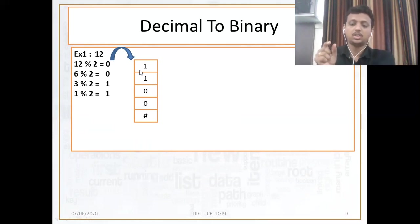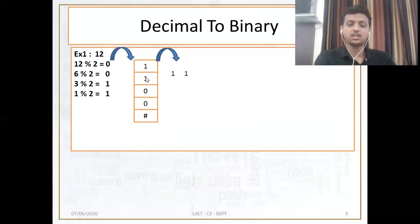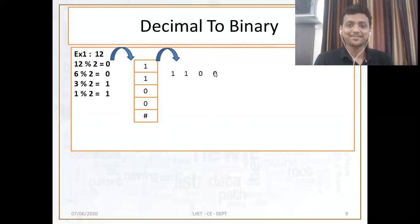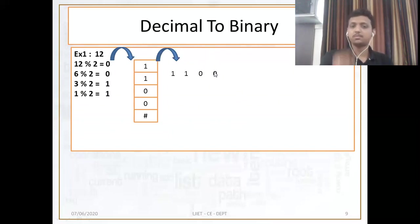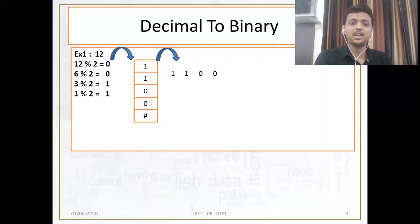The first element is 1 — I am popping out 1. Next again popping out 1. Next I have 0. Next I have 0. So here is your answer. What I did: I found out the remainders, put them inside the stack, and then popped out each and every element from the stack and appended it with my final output string. So this is the answer. Now check whether it equals 12 or not.